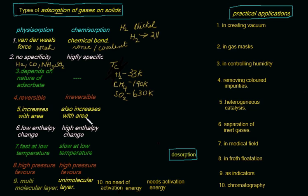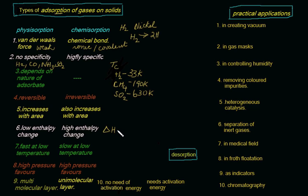Both physisorption and chemisorption increase with increase in area of the adsorbent — the more the adsorbent area, the more quantity can be adsorbed. This is true for both cases. For physisorption, as the force is a weak force, the enthalpy change ΔH is very low compared with chemisorption. In both cases it is an exothermic process, so ΔH is negative — less negative for physisorption and more negative for chemisorption.